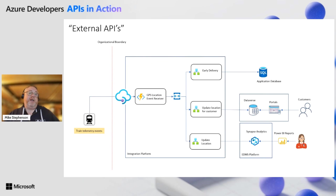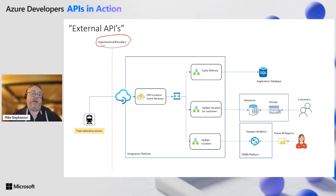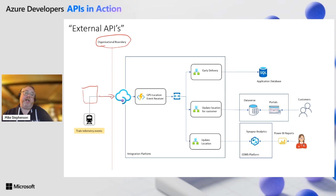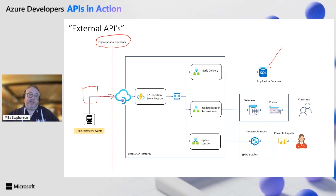The next pattern is what I'd class as an external API. Notice the organizational boundary here — in this case, trains travel around the country and telemetry events come from them through a third party, who collects those messages and forwards them to the organization. API management sits at the edge of the organization, exposing an API out to that third party. The back end handles events from rail cars that need to go to multiple systems: an application database for early delivery, a customer system for order status, and a data platform with Power BI on Synapse for analytics.